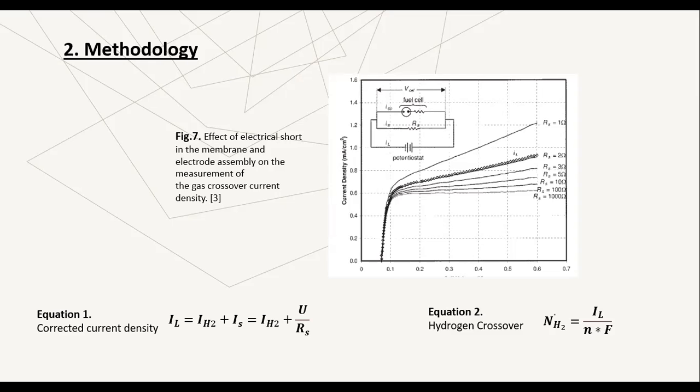To find its value, you must calculate the short circuit resistance by means of the law of Ohm, and then you get the IL current. The calculation of these values can be seen in the equation shown on the screen. With equation 2, it is possible to find the hydrogen crossover where N is the number of equivalents per mole and 96,485 is the Faraday constant.